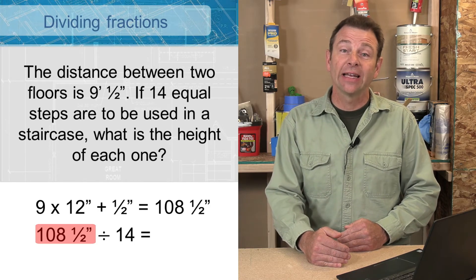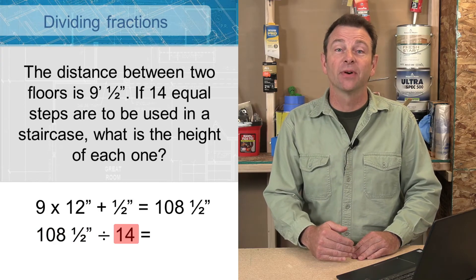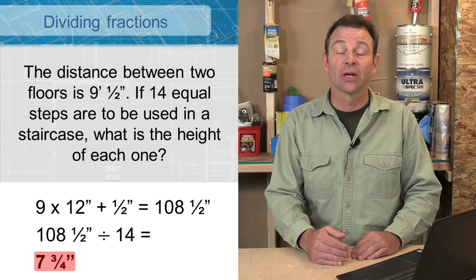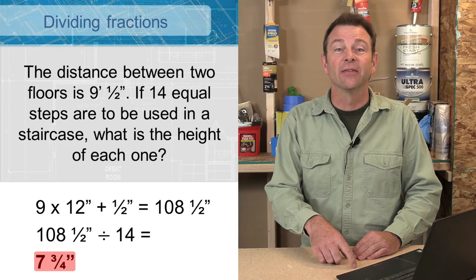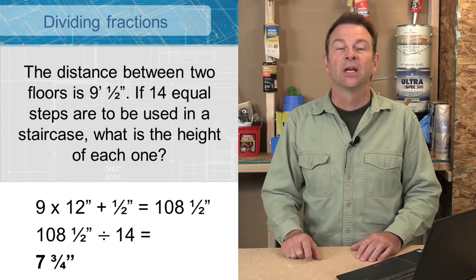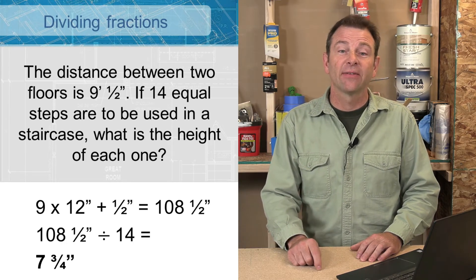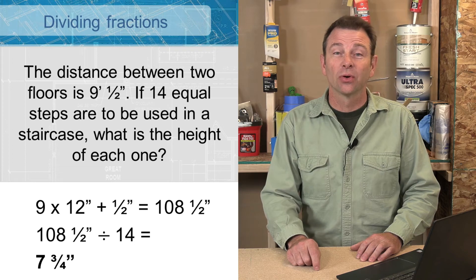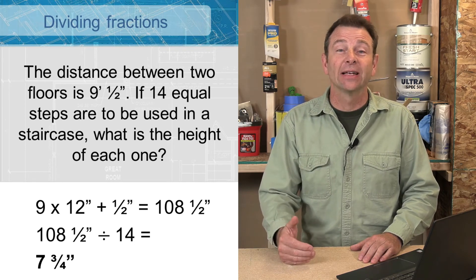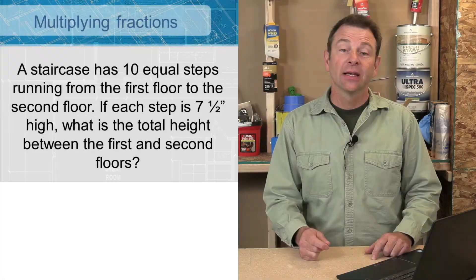Now that we have our inch-only measurement representing the total height of the staircase, we want to divide 108 and a half by 14 — the number of steps. This gives us seven and three quarters, which is the measurement of each single equal step. That means we're going to have 14 stairs that are seven and three quarters inches high, and when you add them all up you end up with nine feet and a half inch.